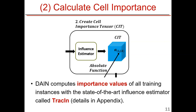Step two is computing the importance of each training cell or training instance. To estimate importance, we use the state-of-the-art method called TracKIn. We will skip the mathematical details due to time constraints, but they are available in our appendix.